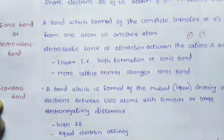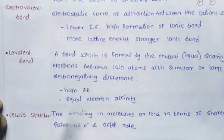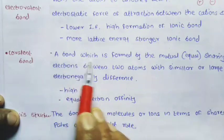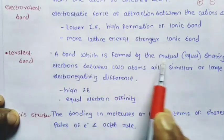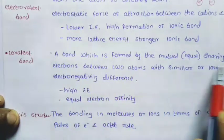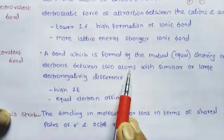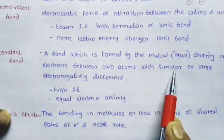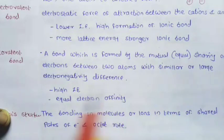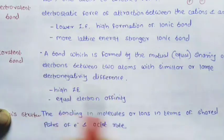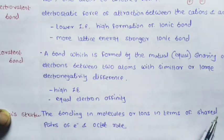The next term is covalent bond. A bond which forms by mutual sharing of electrons between two atoms with similar or smaller electronegativity difference is called a covalent bond.